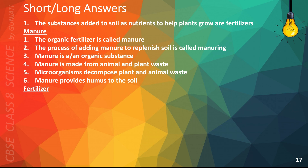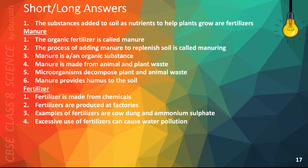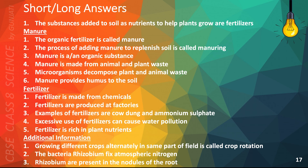The following points will help you answer questions on fertilizers: Fertilizer is made from chemicals. Fertilizers are produced at factories. Examples of fertilizers are cow dung and ammonium sulfate. Excessive use of fertilizers can cause water pollution. Fertilizer is rich in plant nutrients. Additional information: Growing different crops alternately in the same part of the field is called crop rotation. The bacteria Rhizobium fixes atmospheric nitrogen. Rhizobium are present in the nodules of the roots.